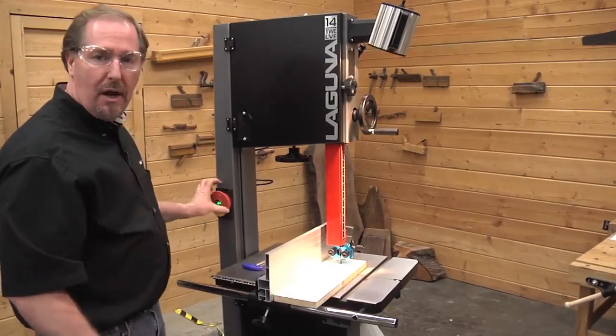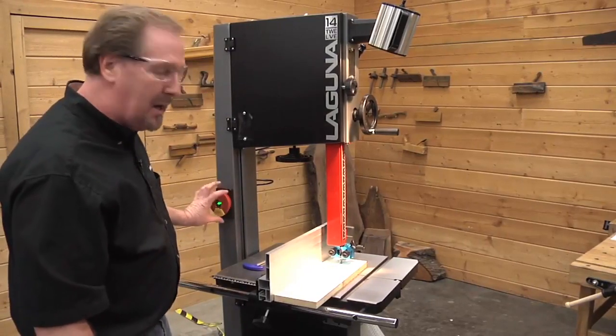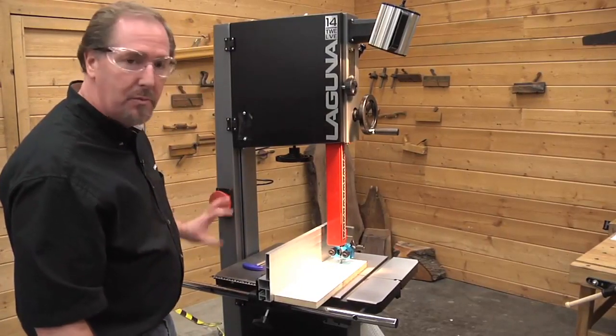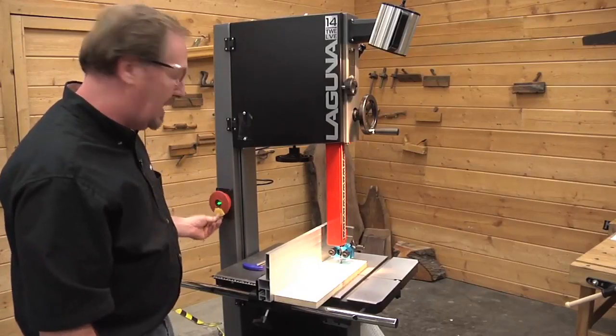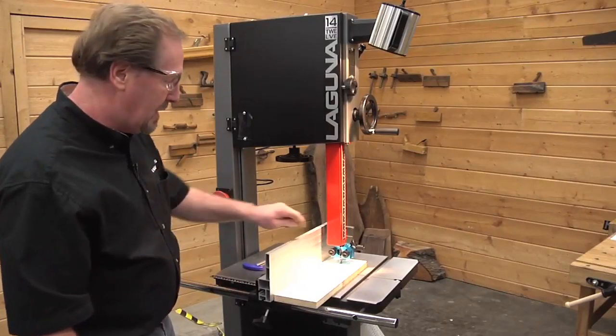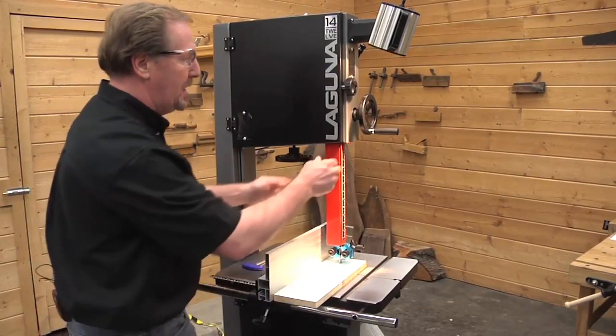With this pulled out, it'll lock out the saw and you won't be able to start it. I'll leave mine in position when I'm in the shop, and when I leave I simply take that out and put it in the toolbox. Let's go ahead and look at the back edge of the cut.